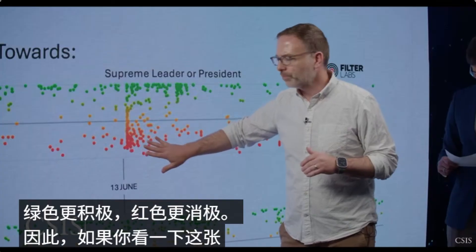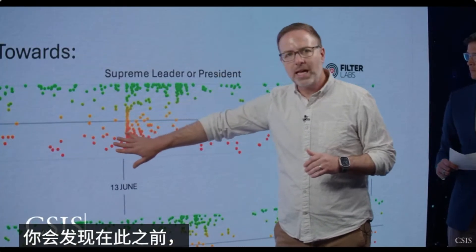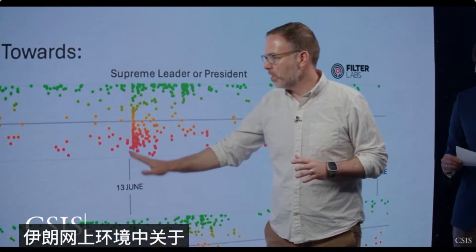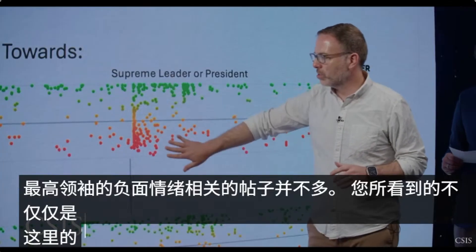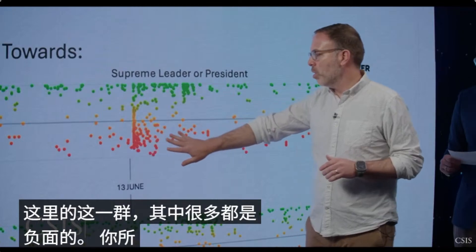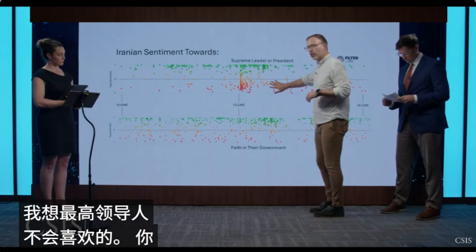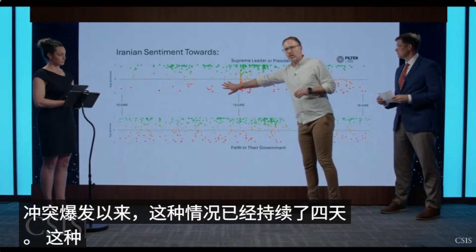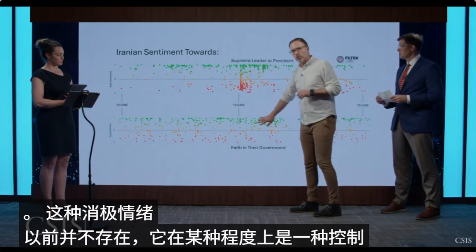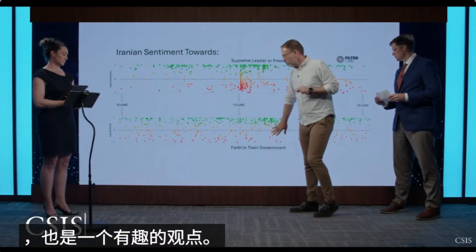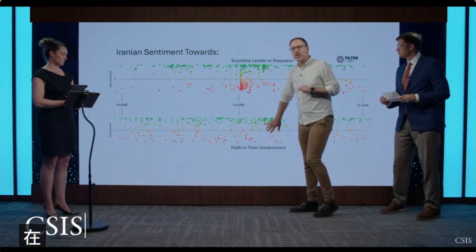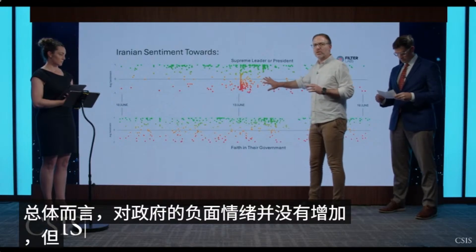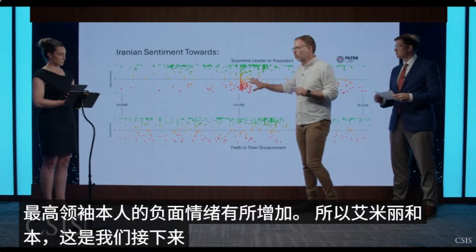Looking at this chart, there's not a whole lot of negative sentiment related to the supreme leader in the Iranian online environment before June 13th. What you see is not just this cluster — a lot of which is negative in tone — but, and this is what the supreme leader is not going to like, this negativity has continued in the four days since the conflict kicked off. That sort of negativity did not exist before. As a control point, Iranians tend to have pretty good faith in their government through this tumultuous time — there's not increased negativity towards the government in general, but there is towards the supreme leader himself. This is something we're going to be watching very closely moving forward.